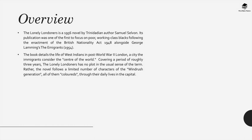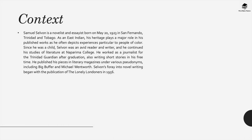Covering a period of roughly three years, The Lonely Londoners has no plot in the usual sense of the term. Rather, the structure of the novel follows a limited number of characters of the Windrush generation, all of them termed as coloureds, through their daily lives in the capital.